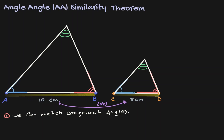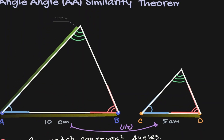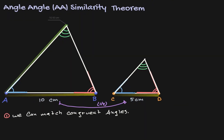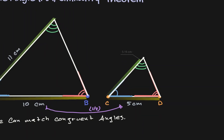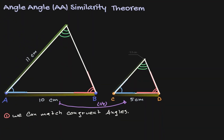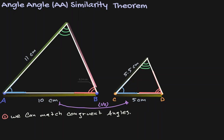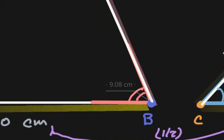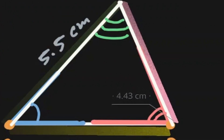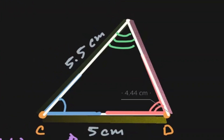Now is this true for all line segments? Let's take a look. The length of the left-hand line segment is 11 cm, and the length on the right hand side is 5.5 cm. The length on the left hand side is 9 cm, and the length on the right hand side is 4.5 cm.